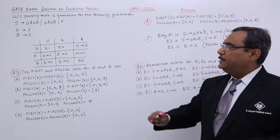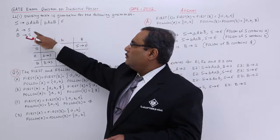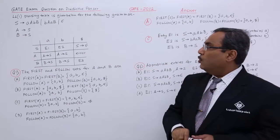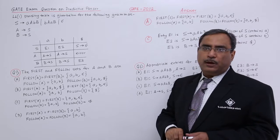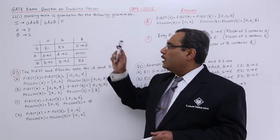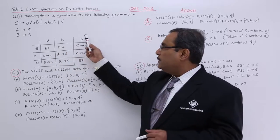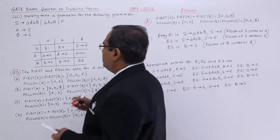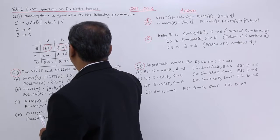S produces AABB, BAAB, epsilon. A produces S and B produces S. These are the respective production rules given. Epsilon means null and dollar means end of string marker. They have given a parsing table, but here you see the parsing table is incomplete. In some places they have put E1, E2 and E3.